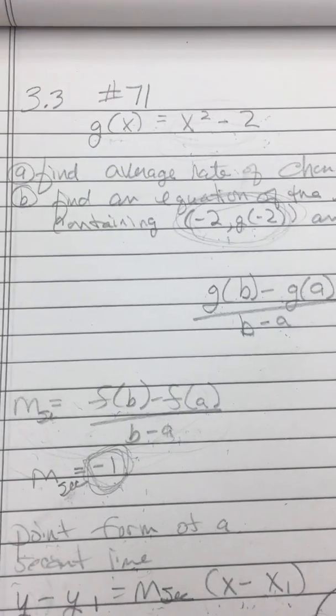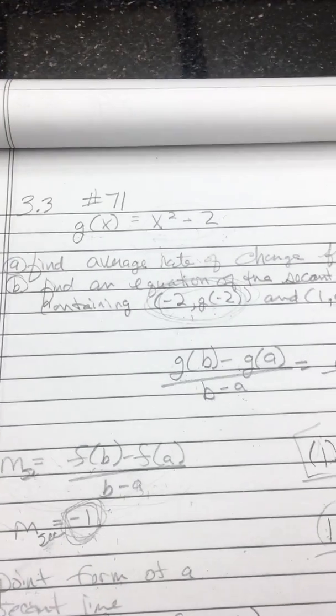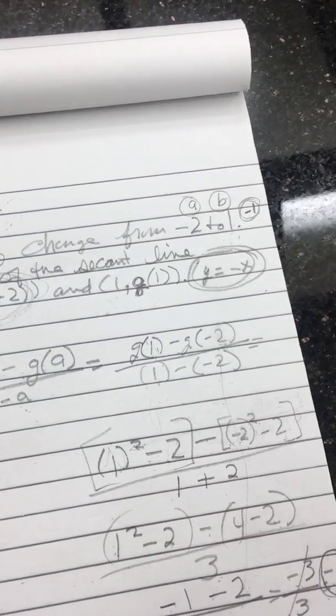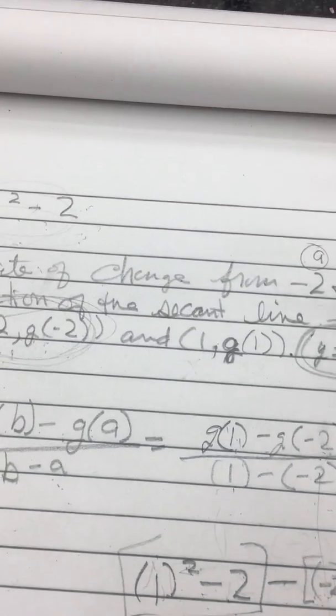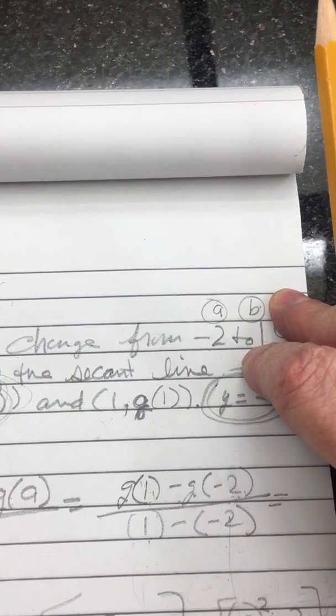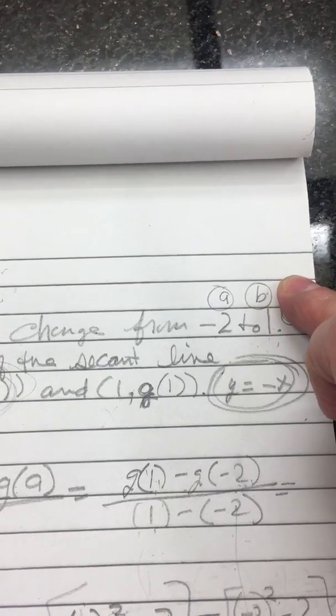Okay, 3.3 number 71. Part A is find the average rate of change from negative 2 to 1. Okay, the negative 1 is your answer, but just let the negative 2 be equal to A and the 1 be equal to B.